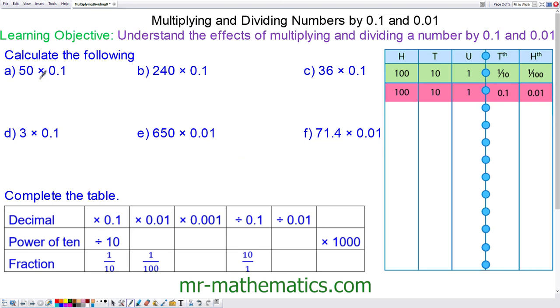Begin with question A and we're timesing 50 by 0.1. So 0.1 in our place value table is 1 tenth. So it is 50 times 1 tenth which is 50 divided by 10, and that is 5.